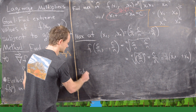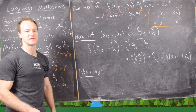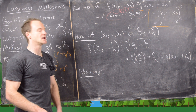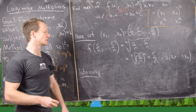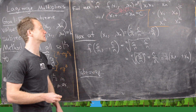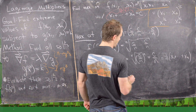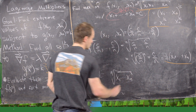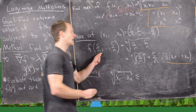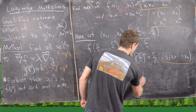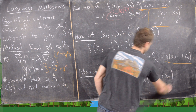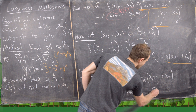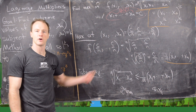Since this is the absolute maximum of the function, any other input gives a value less than or equal to it. This means for all x we have the inequality: the nth root of x1 times … times xn is less than or equal to (1/n)(x1 + … + xn). This is exactly the geometric-arithmetic mean inequality, and that's a good place to end the video.